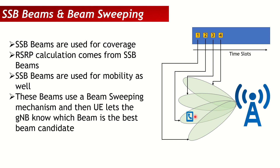More beams means narrower beams sweeping the same cell area, which may give better SSB quality and SSB SINR. That's what beam sweeping is and how it works. In the next video, we'll talk about the differences between SSB beams, beams from the PMI, and beams from the SRS. Stay tuned — it will come up shortly. Thank you so much.